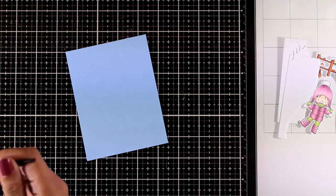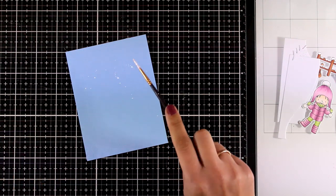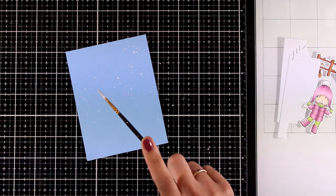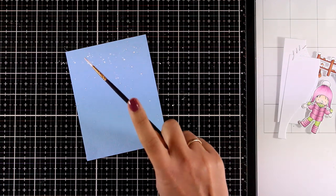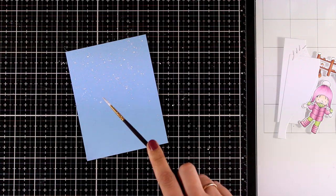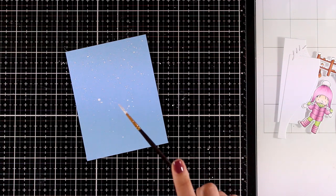For my background I will use this blue cardstock. This is 4 by 5 and a quarter. So it is a quarter smaller in every dimension. And this is going to give a lovely border when I stick that on top of my card base.